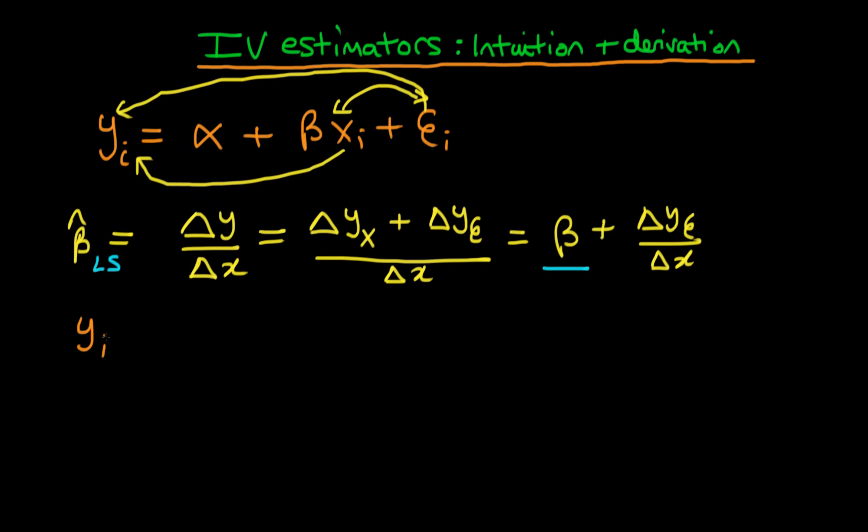Well, the idea is that if we can find some third variable, which I'm going to call z, which is correlated with x. So let me just write z here. So the idea is that changes in z are associated with changes in x, but importantly are not associated with changes in the error term.